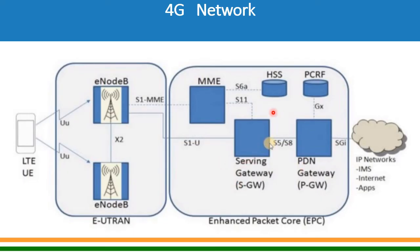The Serving Gateway connects to E Node B for user plane data, and PDN Gateway connects to the outside IP network on the SGi interface. All data towards the IP network goes through PDN Gateway. As the name suggests, PDN Gateway is the gateway towards the IP network, and Serving Gateway is the gateway towards E Node B.